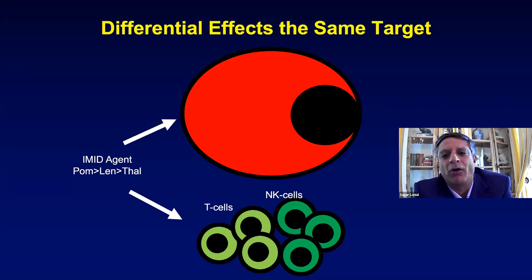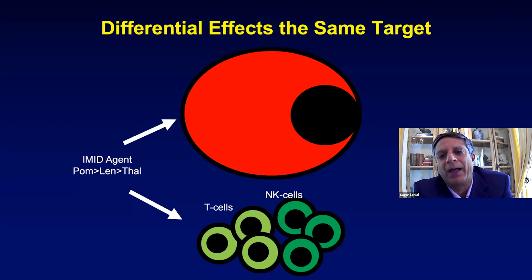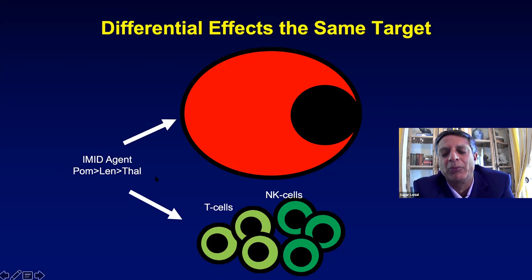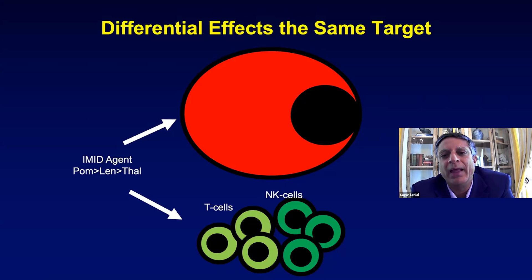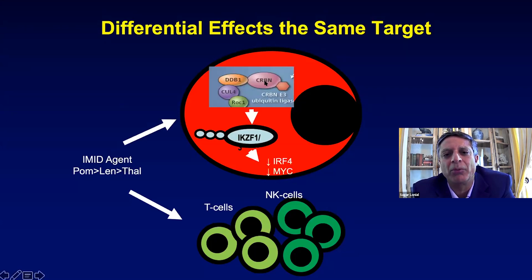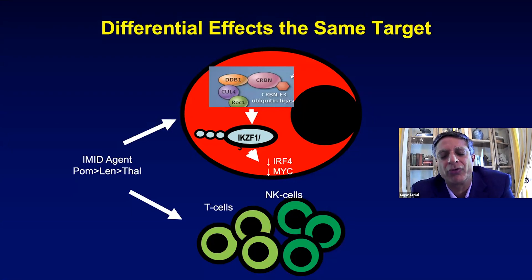What I want to talk about are some targets that are oldies but goodies — targeting cereblon. Cereblon is something that's within every cell, and in fact cereblon expression in myeloma cells is no different than in normal plasma cells. The IMIDs — pomalidomide, lenalidomide, and thalidomide — are all in the same family. Cereblon is a target present both in the myeloma cell and in the immune system, and when you target cereblon it attacks IKZF1, whose surrogates are Ikaros and Aiolos.